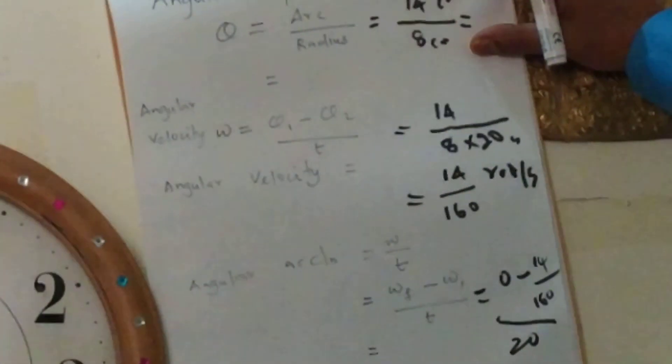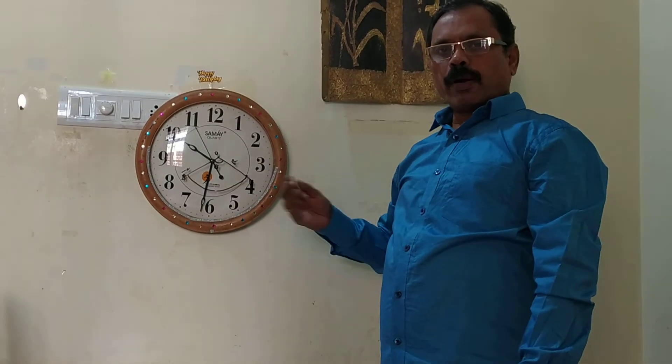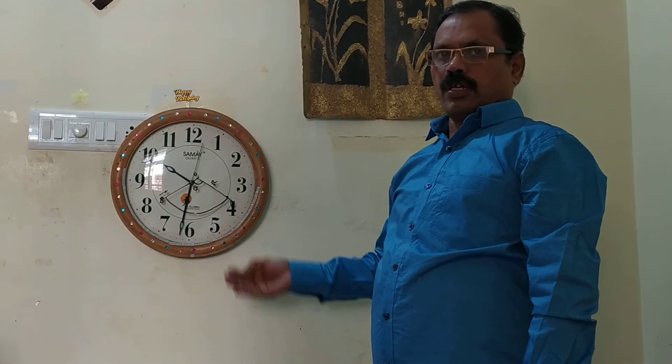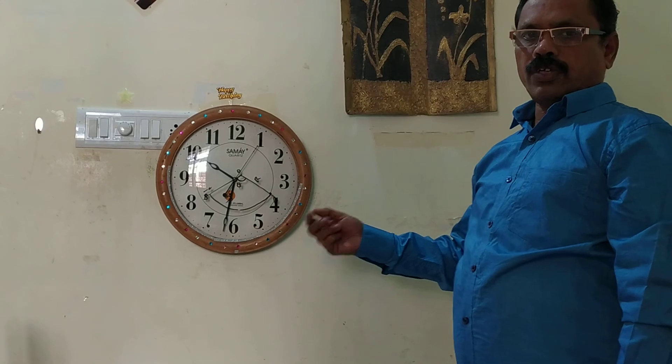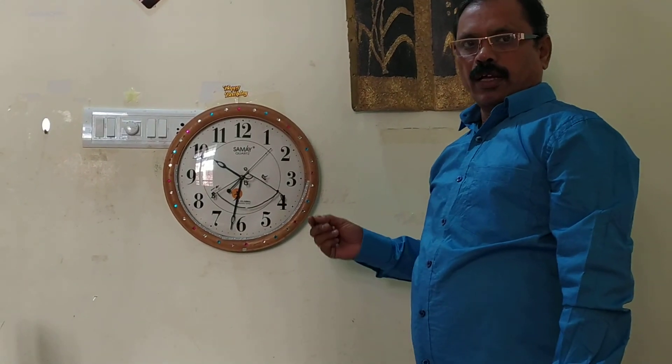If we are taking the minute hand also, then you can find it easily and understand how to calculate the angular velocity and angular acceleration with respect to this clock. You can also do another one — the calculation method using a cycle. When you are pedaling, the wheel accelerates. When the velocity of the cycle is increasing or changing, then you can find the velocity of the rotation of the wheel.